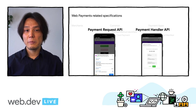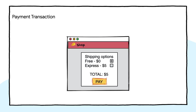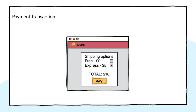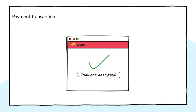Here's how a Web Payment flow starts. A website invokes the Payment Request API. The customer's preferred payment app is launched inside a special modal window. The customer interacts with the payment app to confirm and authorize the transaction. The payment app then returns a payment credential that can be verified and processed.